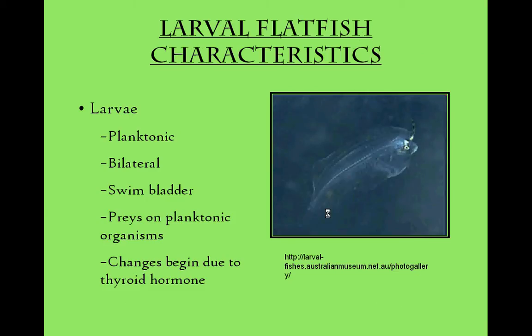The eggs will hatch into larvae resembling that of bilateral fishes. They are considered planktonic and move about in the ocean amongst the currents. A larval left-eye flounder is pictured here on the right. It is important to note that in this stage of life, flatfish do possess a swim bladder and prey on planktonic organisms.